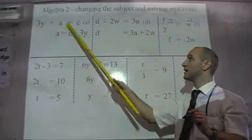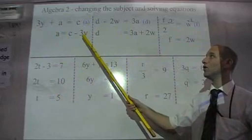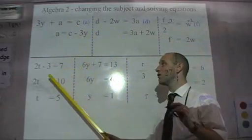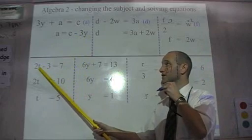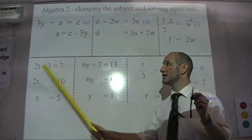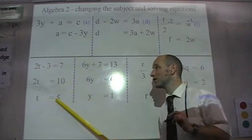What we've seen here is using doing the same thing to both sides, we can change the subject of an equation. What we're now going to do is use that same method to solve equations. Here, I only have T as the unknown. We're going to do the same thing to both sides, to work through and get T all by itself, which will give me the answer.